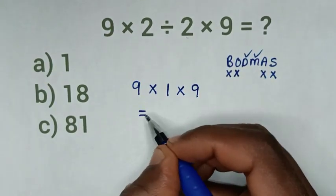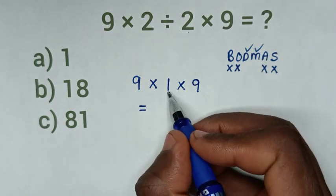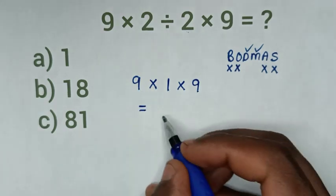So, it will be equal to 9 times 1 is 9, 9 times 9 is 81.